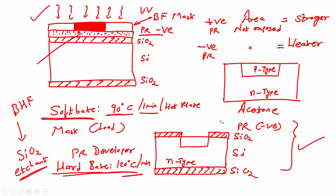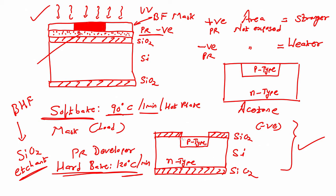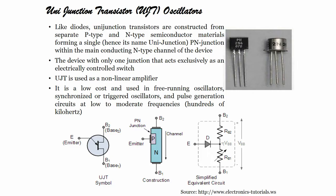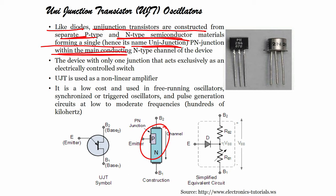We can now dope using either diffusion or ion implantation to introduce p-type material. Once that is done, we keep the wafer in BHF again and the SiO₂ is removed. When SiO₂ is removed we get the wafer we wanted — this is how we obtain a p-type doping in n-type material, forming a single p-n junction within the main conducting n-type channel of the device.